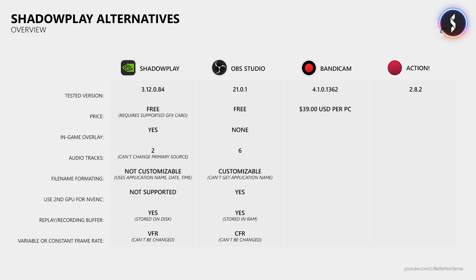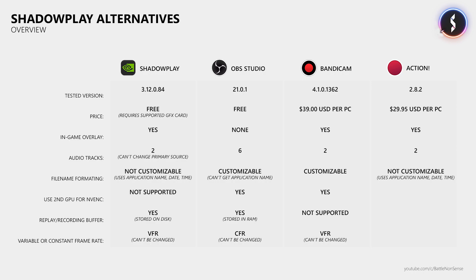Bandicam costs $39 USD and requires one license per PC. Like Shadowplay it has an in-game overlay and you can only record 2 audio tracks, but unlike Shadowplay you can select the source for your primary audio track. You can customize the filename of recordings and use a second GPU for NVENC encoding, but it doesn't have a replay buffer and while you can choose between variable and constant bitrate, it only records with a variable frame rate. Action is cheaper than Bandicam but also needs one license per PC. It has an in-game overlay and supports a maximum of 2 audio tracks. Sadly, you can't customize the filenames, but it uses a system very similar to Shadowplay to keep things organized. It cannot use a second GPU for NVENC encoding, but it does come with a replay buffer, which is sadly limited to 13 minutes and 1080p according to their website. Like Shadowplay and Bandicam, it only uses a variable frame rate.